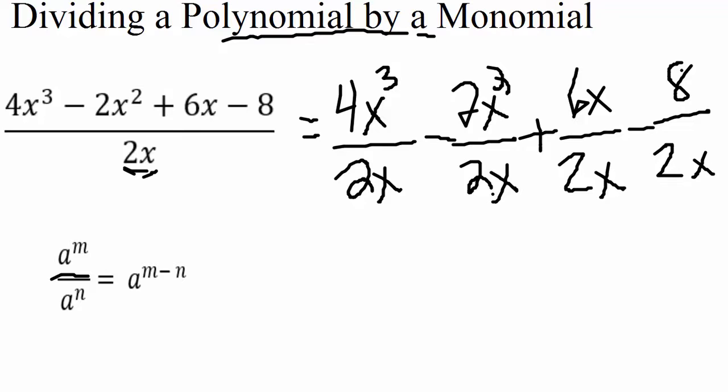And the rule says that when we are dividing our like bases that we can just move our base over and subtract our exponents. It's always the top exponent minus the bottom exponent. So what that's going to look like in our problem here.